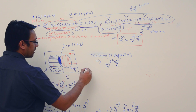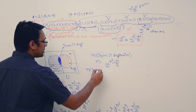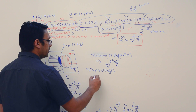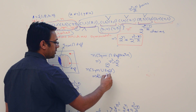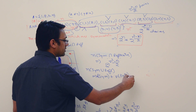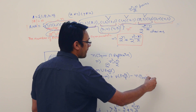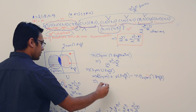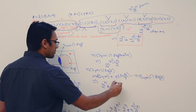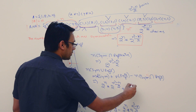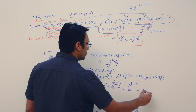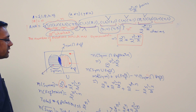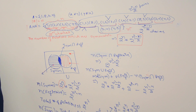The number of relations which are symmetric or reflexive can be found using inclusion-exclusion: number of symmetric relations plus number of reflexive relations minus number of symmetric and reflexive relations. That is: 2^n × 2^((n²−n)/2) + 2^(n²−n) − 2^((n²−n)/2).